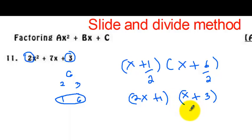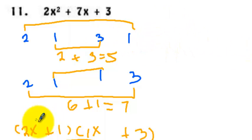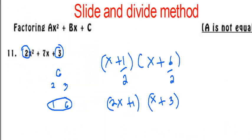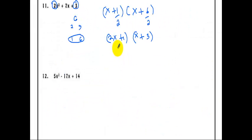So the factors of 2x squared plus 7x plus 6 are 2x plus 1 and x plus 3. Comparing it to the first method we discussed, we got the same answer: 2x plus 1, x plus 3. Alright, next example. We are going to use the slide and divide method again.